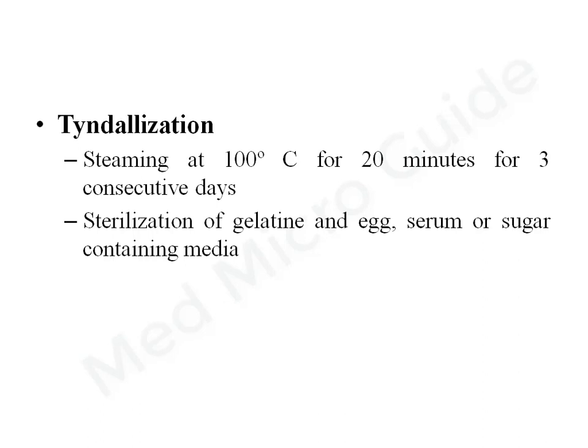On the first day of heating, almost all the vegetative forms are killed. On the subsequent days, the spores which germinate into vegetative forms are killed. This method of sterilization is used to sterilize gelatin, egg, serum, or sugar-containing media.